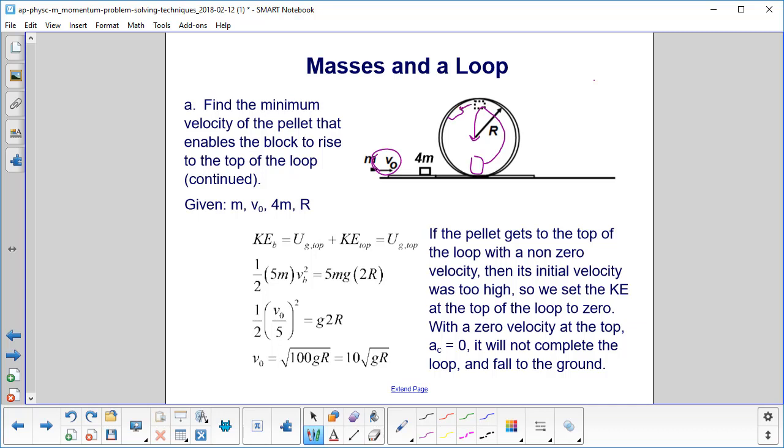So we're going to set the kinetic energy at the top of the loop to zero. That's the key point. So if we have a zero velocity at the top, our centripetal acceleration will be zero, because that's v squared over r. It won't complete the loop and it will fall to the ground.